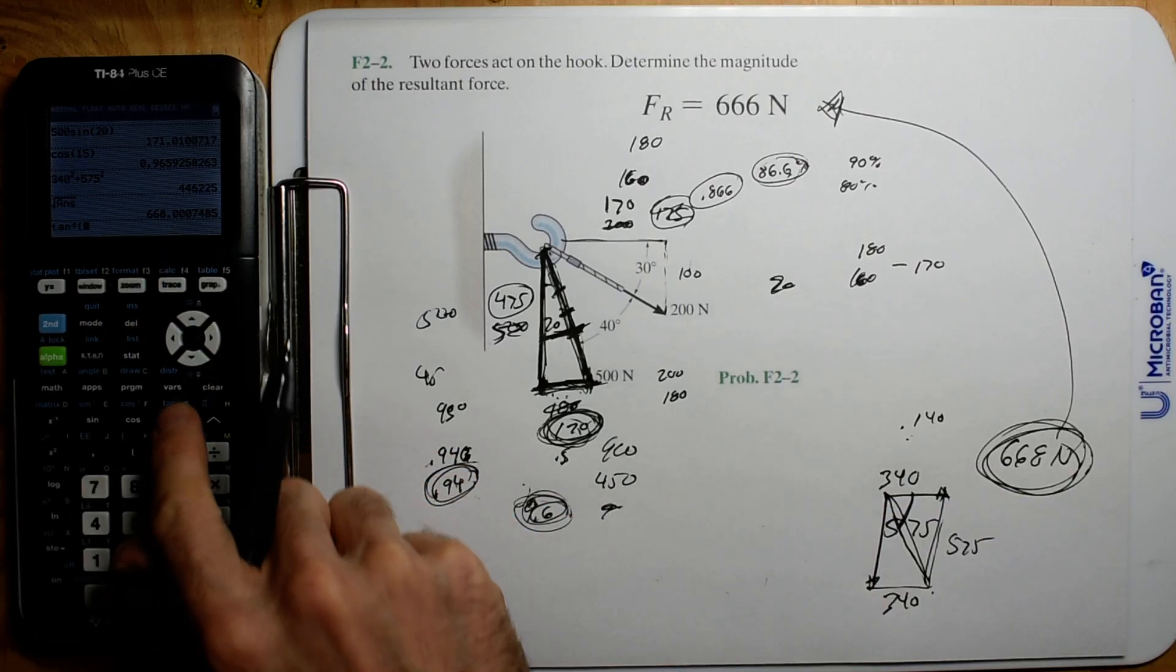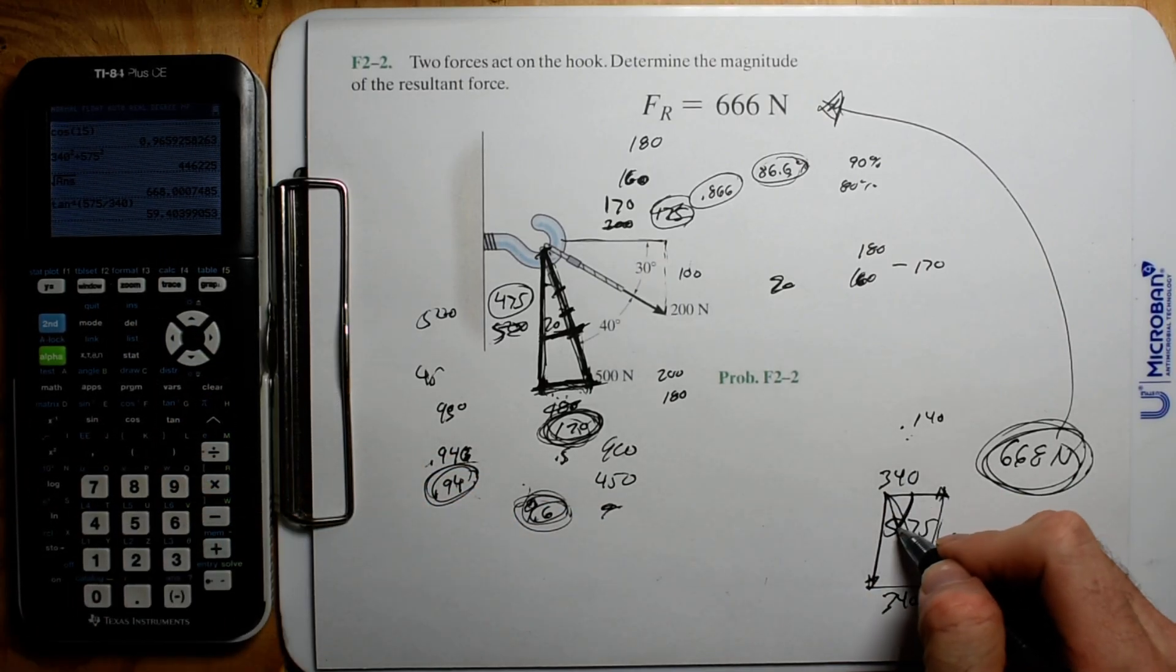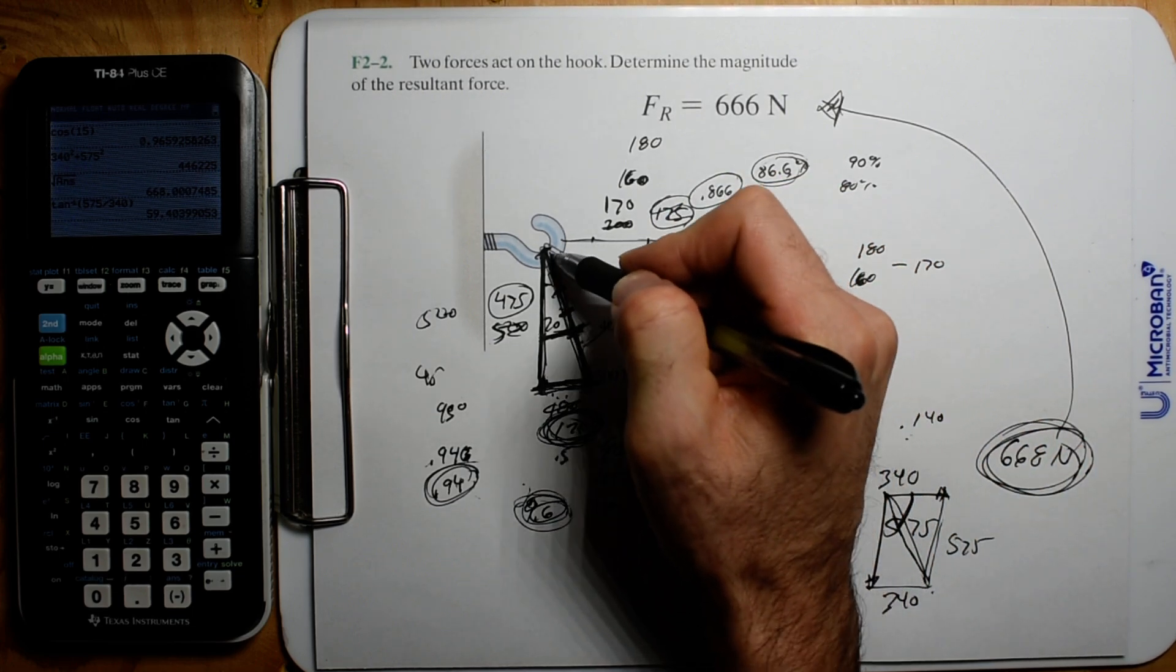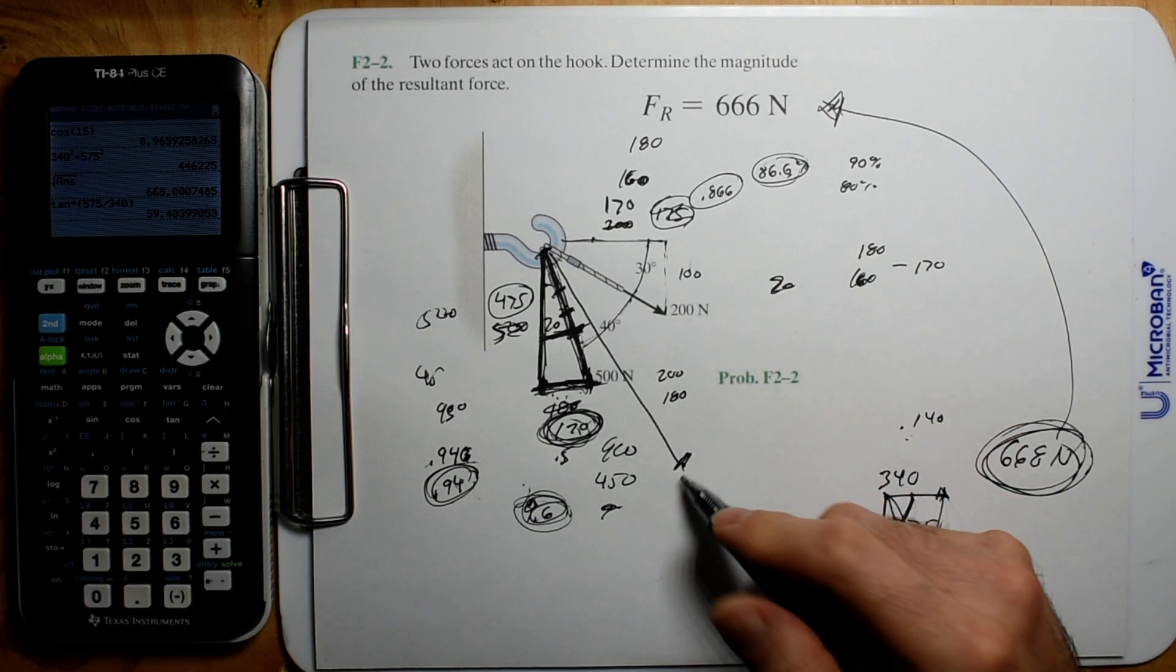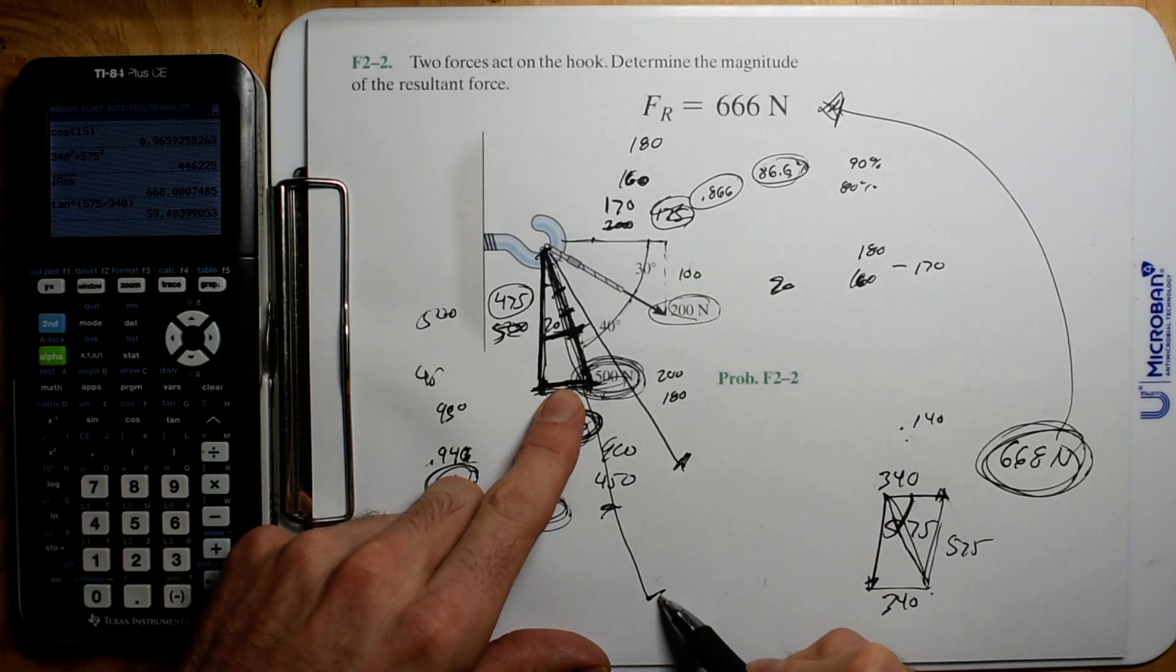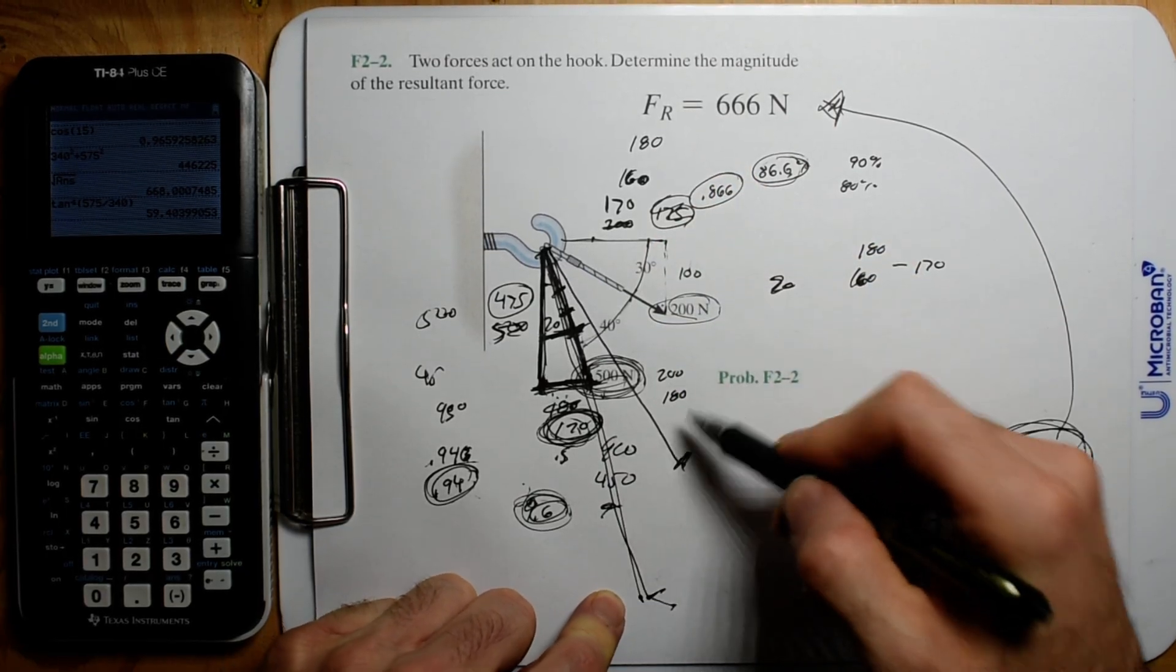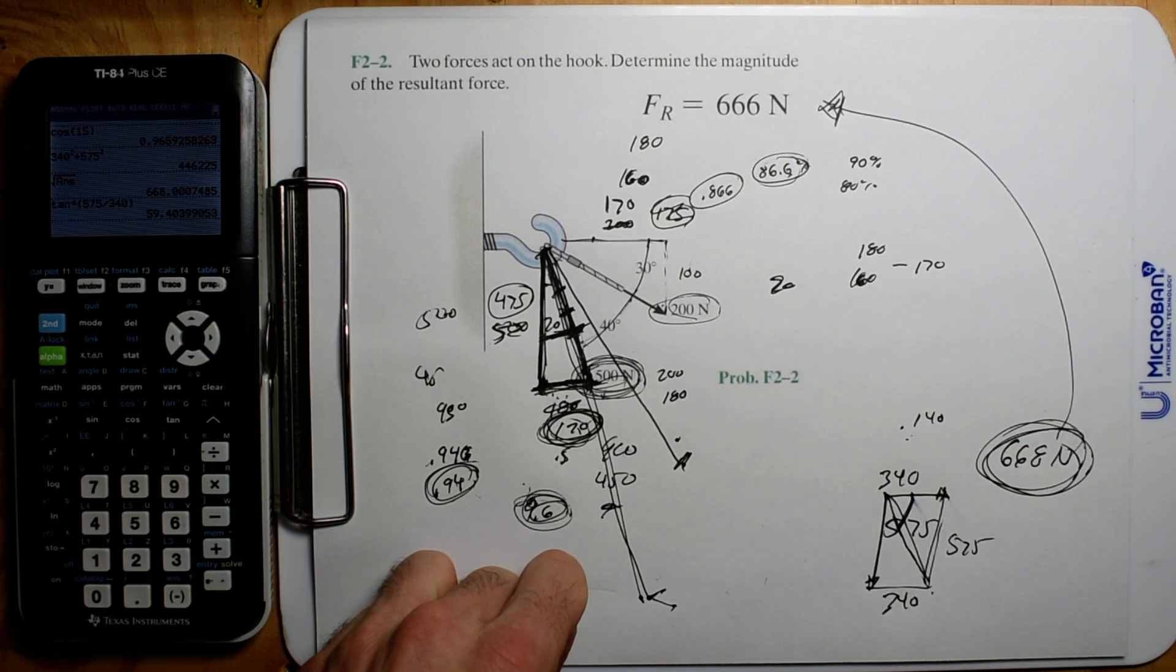So it's going to be the inverse tangent of 575 divided by 340. Hell yeah, so that angle is going to be 60 degrees. Basically, if this is 70, the resultant's pretty close to 60. And we just went over that probably in the previous video, saying that hell yeah, this is way more substantial than this. If this was 500 this way and then nothing in this direction, yeah, the angle would be 70. Our angle's 60, and we did it.